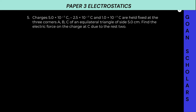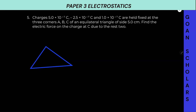5 × 10⁻⁷, minus 2.5 × 10⁻⁷, and 1 × 10⁻⁷ are held fixed at the three corners of an equilateral triangle. Let us draw a triangle. In this equilateral triangle, one charge is 5 × 10⁻⁷, another charge is minus 2.5 × 10⁻⁷, and here 1 × 10⁻⁷. The equilateral triangle side is 5 cm.